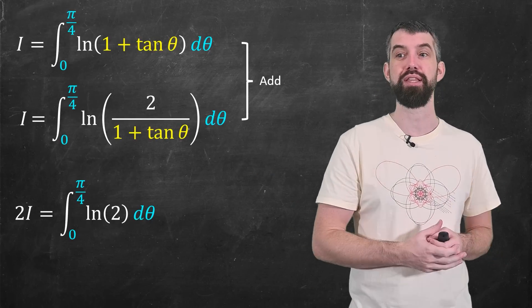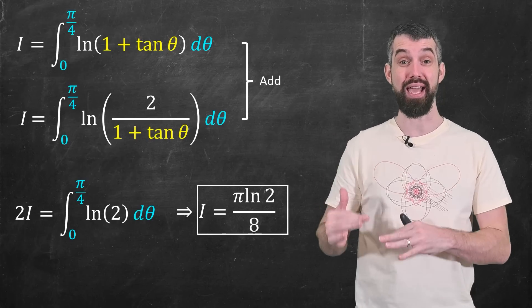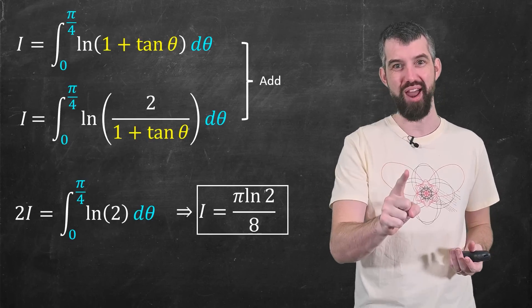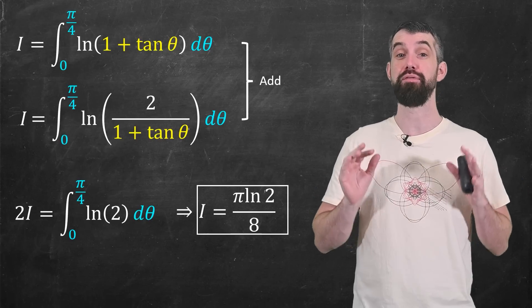So the fact that I had these two different expressions that had a lot of similarity allowed for this cancellation. And then this is just a constant, you get the value, divide it up by the 2, and i is pi times logarithm of 2 divided by 8. But that was just method 1. Now let's try method 2, which is a completely different style of trickery.